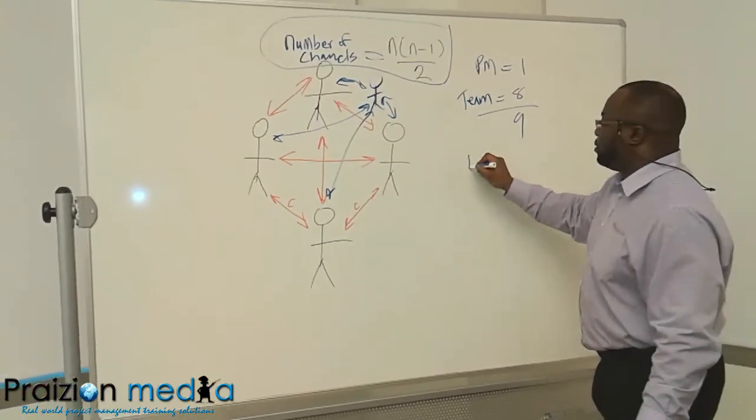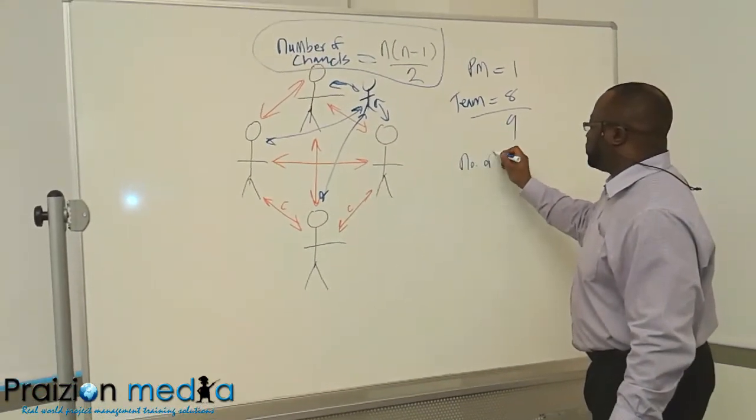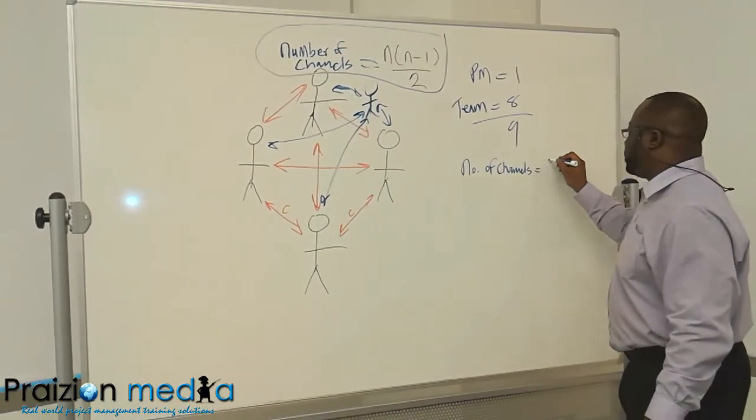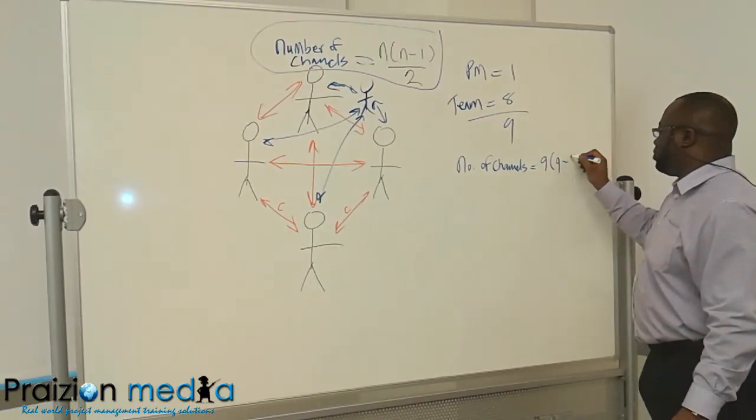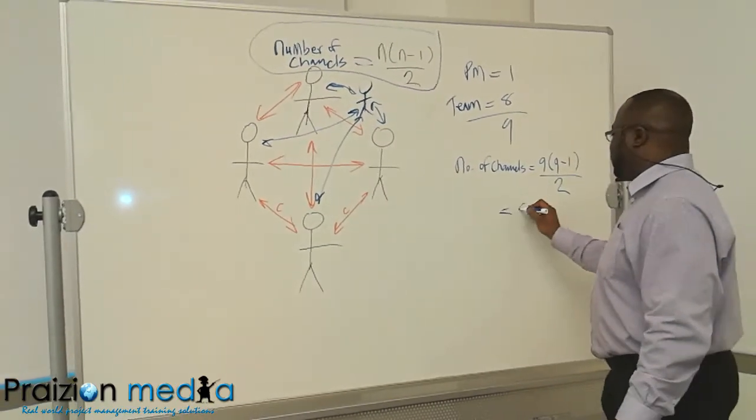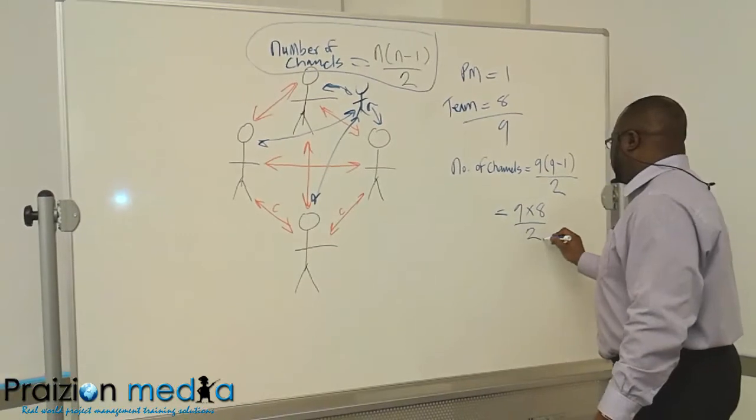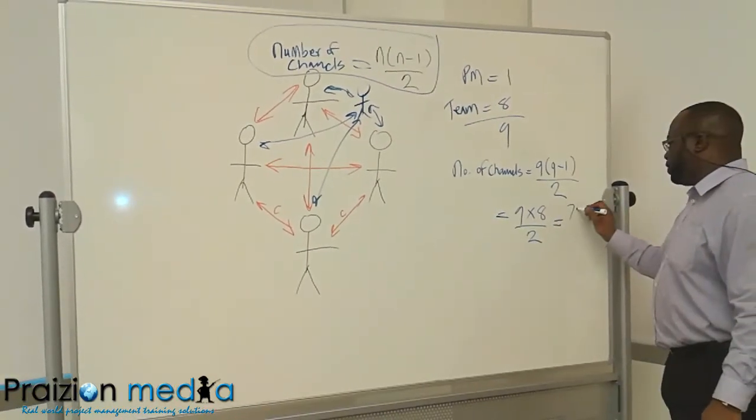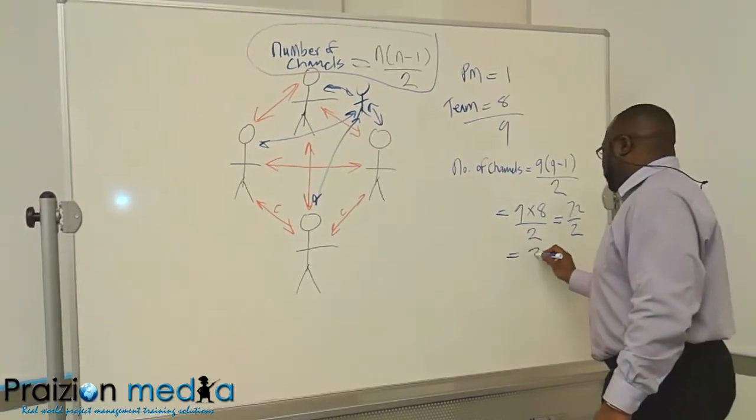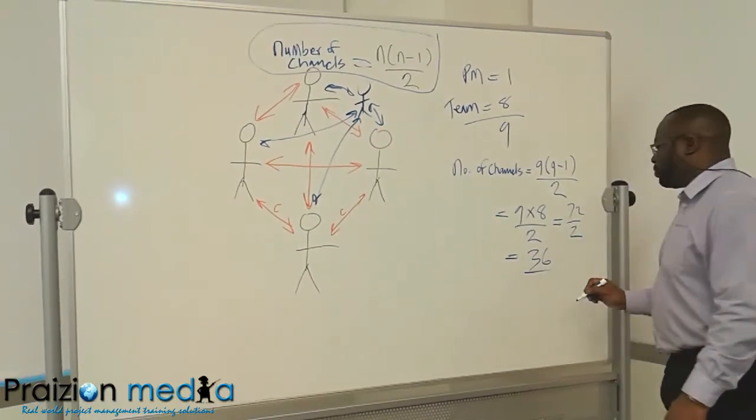So your number of channels formula is going to be equal to 9 times 9 minus 1 divided by 2, which is 9 times 8 divided by 2, which is 72 over 2, which is 36. 36 channels of communication.